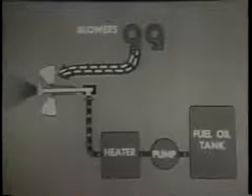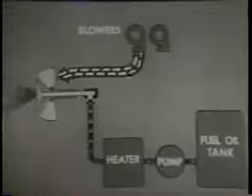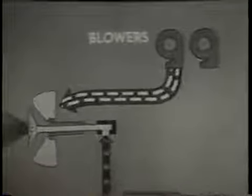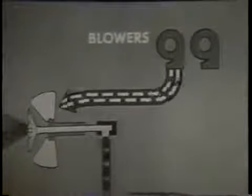Controlling the forced draft blowers is the principal method of controlling the quantity of air reaching the burner. For example, to increase the air a moderate amount, you increase the speed of the blower in service. Or, if even more air is needed, you cut in another blower. You can make minor adjustments in the air supply with the air doors.